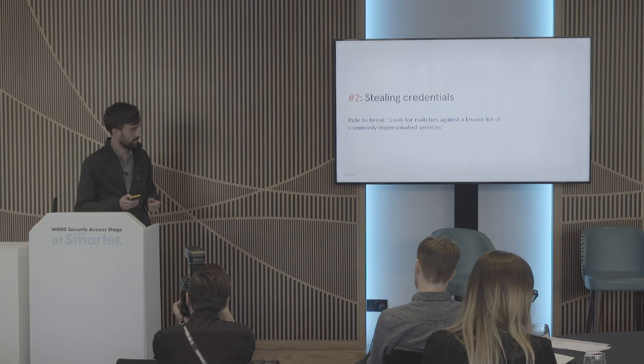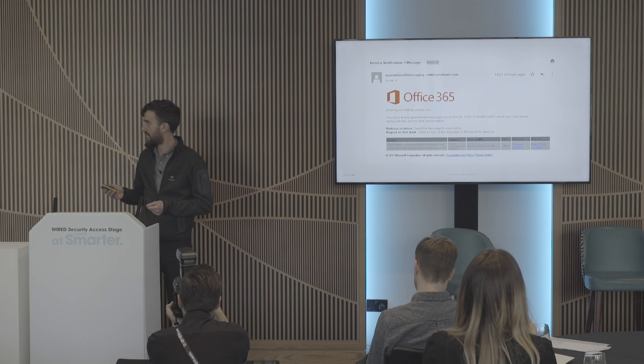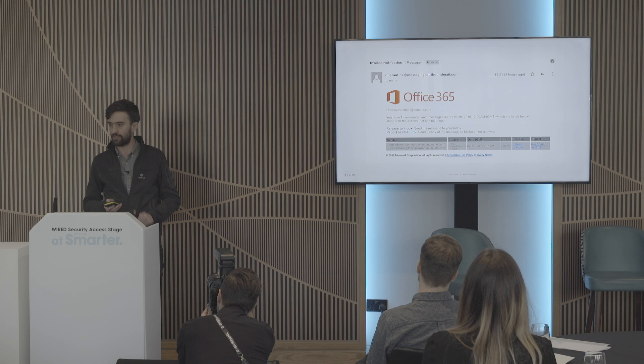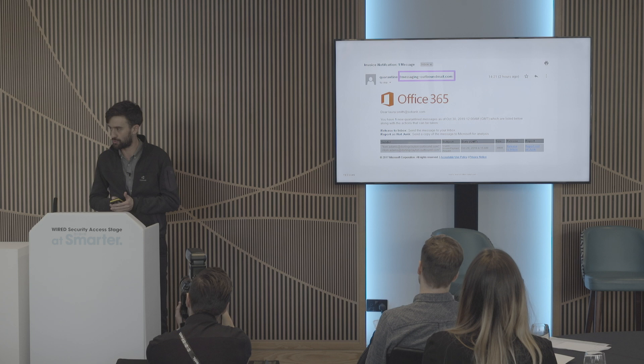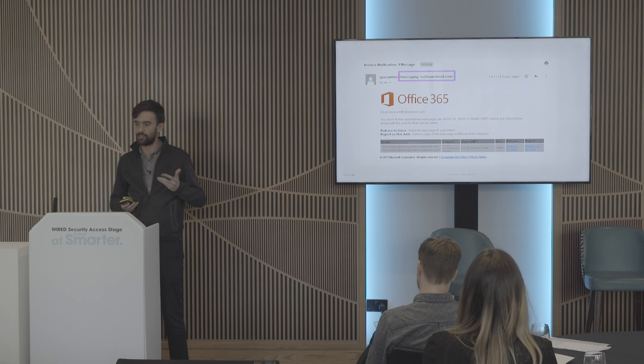Now we're going to ramp it up with something more advanced. Rather than asking for money on the originating email, we're actually going to try and steal Laura's email credentials. The rule I'm looking to break here is that legacy tools look within the email body for exact matches against a list of well-known services commonly impersonated — Microsoft, Dropbox — services that get impersonated all the time. Here, Laura has received an email from Microsoft saying she has a message quarantined. This is exactly what Microsoft emails look like, and Laura will see these multiple times a week.